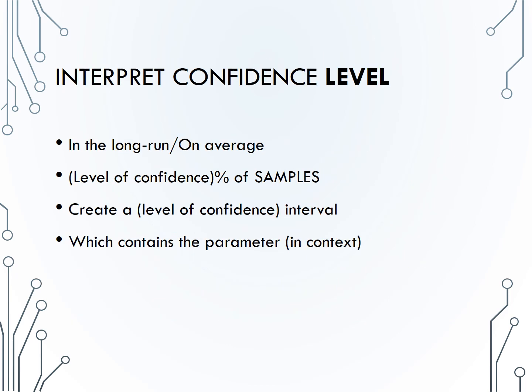This is how we interpret a confidence level. In the long run, or on average, 95% of samples would create a confidence interval of a 95% level which would actually contain the parameter. In general terms, you just need to include the level of confidence desired, or that you are interpreting, and what the parameter is that you're trying to estimate, in the context of the problem.